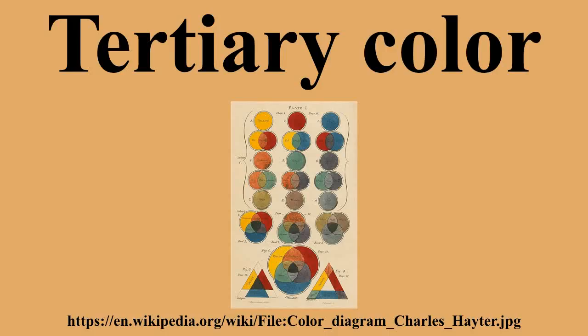Tertiary and quaternary color terms: the terms for the RYB tertiary colors are not set. For the six RYB hues intermediate between the RYB primary and secondary colors, the names amber, marigold, vermilion, cinnabar, magenta, violet, teal, aqua, and chartreuse lime green are commonly found. The names for the twelve quaternary colors are more variable, if they exist at all.